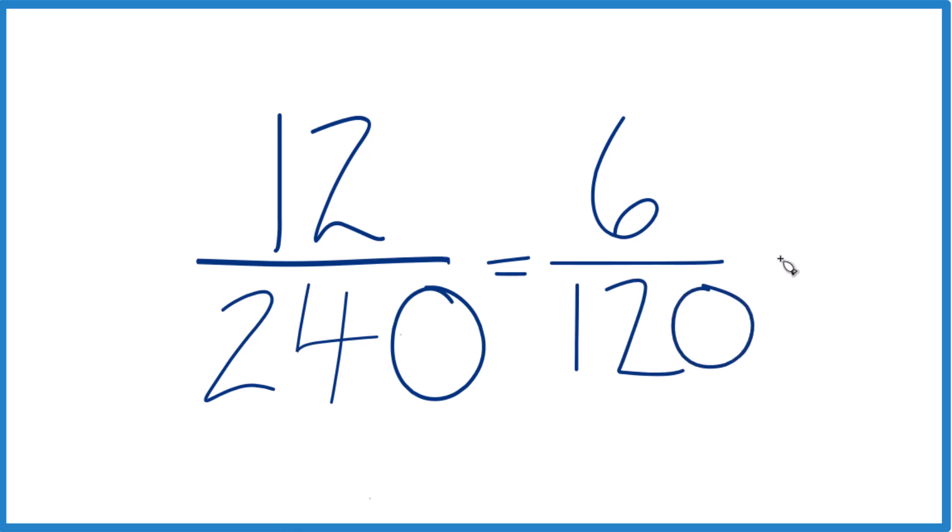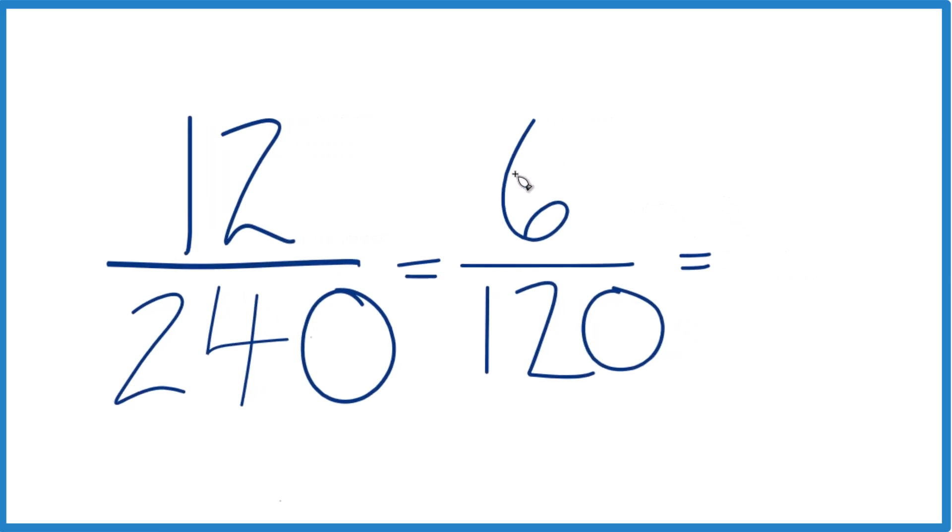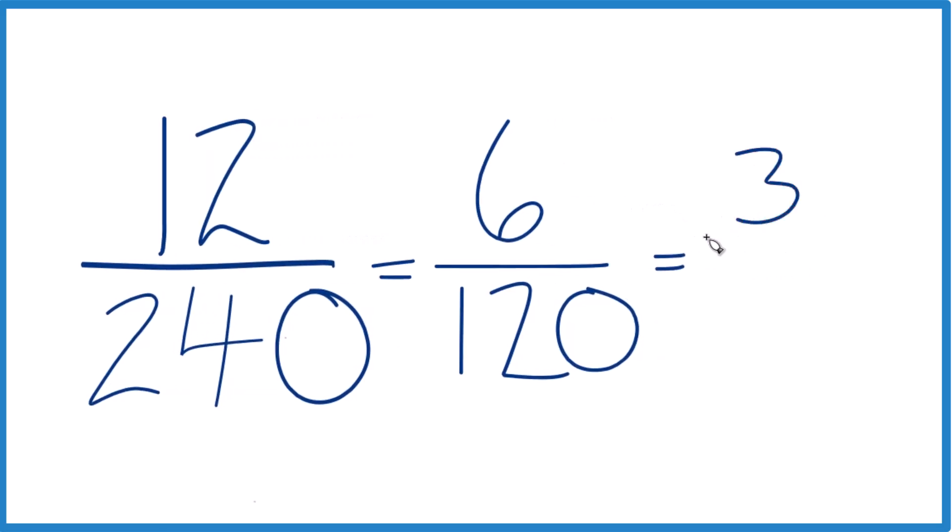And these are even numbers too. I'm just going to do it again. 6 divided by 2 is 3, and 120 divided by 2 is, well, let's see, 60. Yeah, because 60 times 2 is 120.